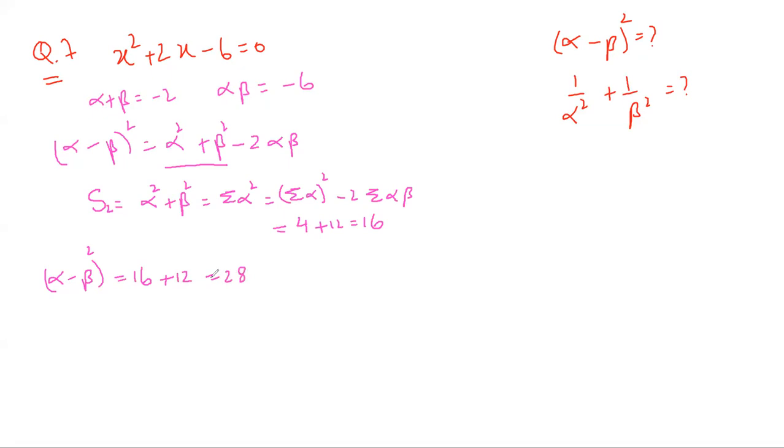Okay. Now we go on to this one over alpha squared plus beta squared. I'll be doing this through two ways.